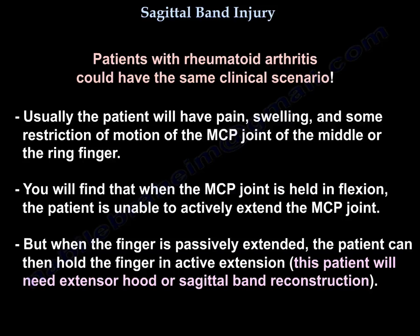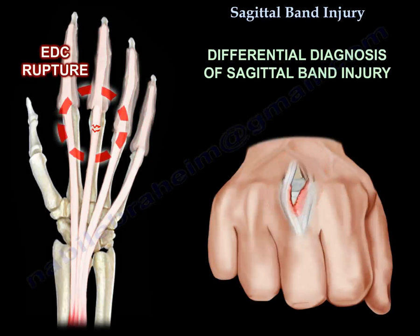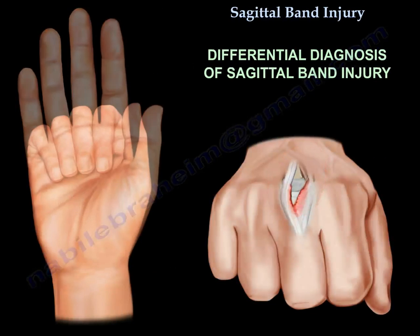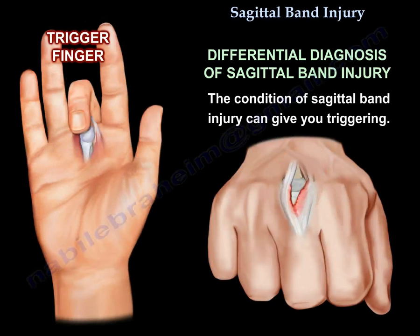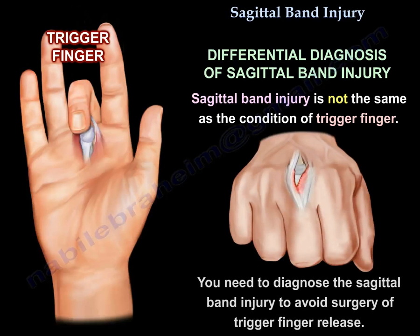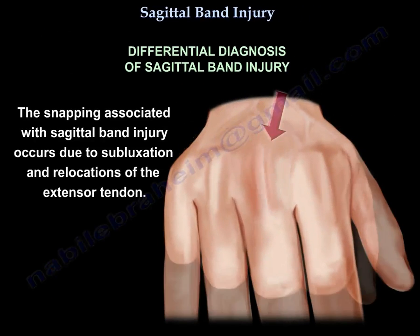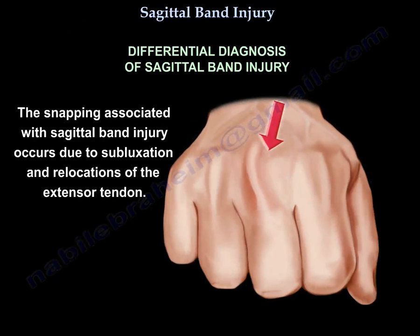This patient will need extensor hood or sagittal band reconstruction. Differential diagnosis of sagittal band injury includes extensor digitorum communis rupture and trigger finger. The condition of sagittal band injury can give you triggering, but this is not a condition of trigger finger. You will need to diagnose this condition correctly to avoid a trigger finger release, because the snapping occurs from subluxation and relocation of the extensor tendon.